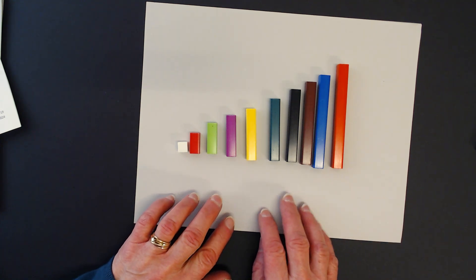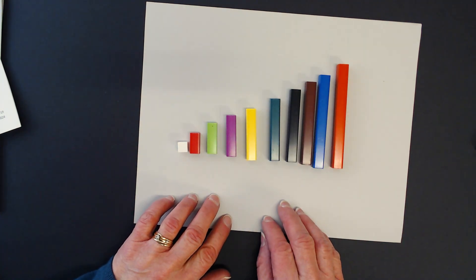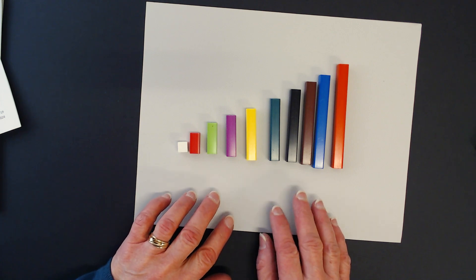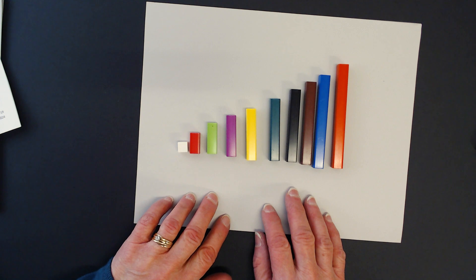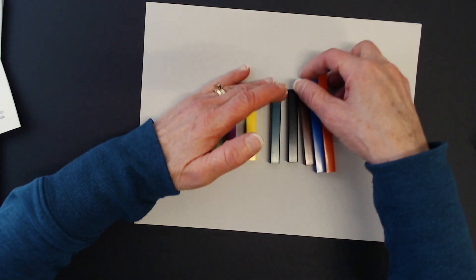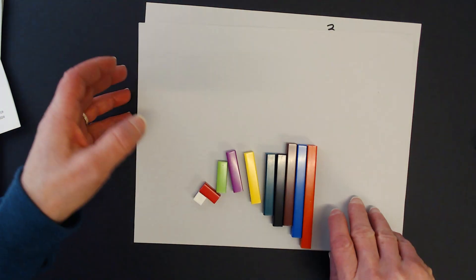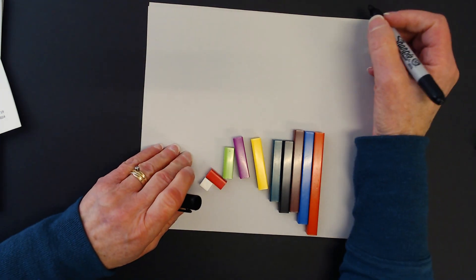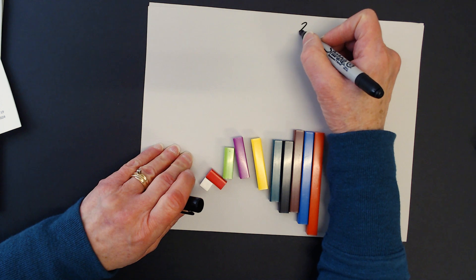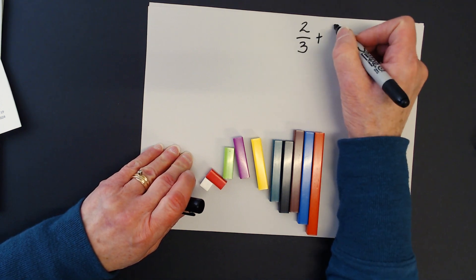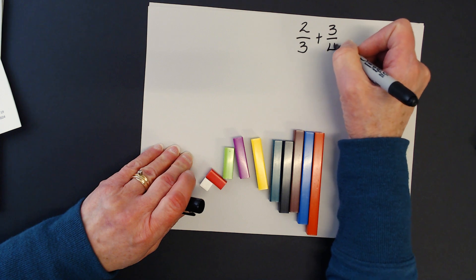One thing that we can do with them is build fractions, and we can also add and subtract fractions. In this case we want to add two fractions that have unrelated denominators. So I'm going to write down an expression that reflects that. Here I have two thirds, and I want to add three quarters.